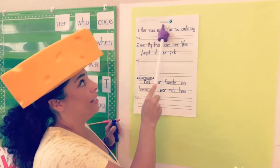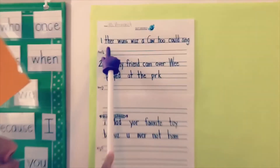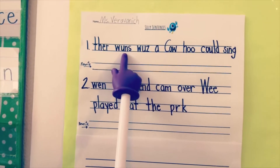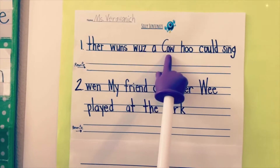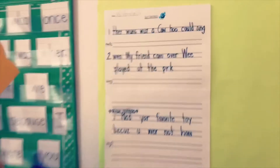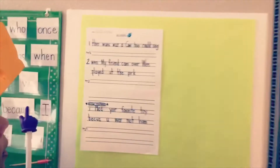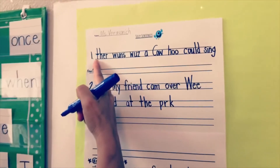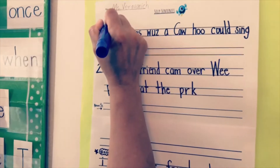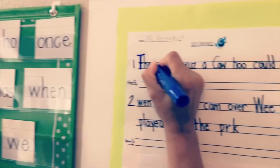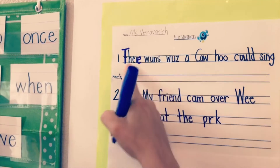Make sure you have your name at the top of your silly sentences, and I'll read the first one that we're going to do together. It says: 'there once was a cow who could sing.' What's the first thing you notice right away? That's right — there needs to be a capital letter at the beginning of your sentence. So make that a capital T.